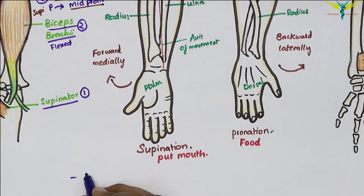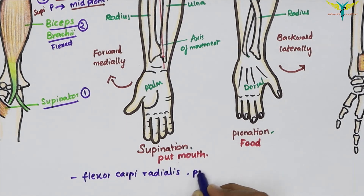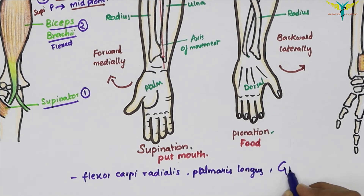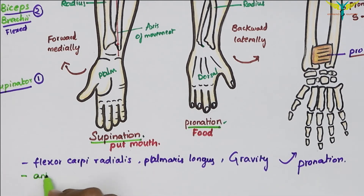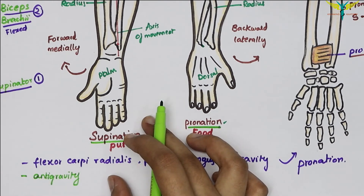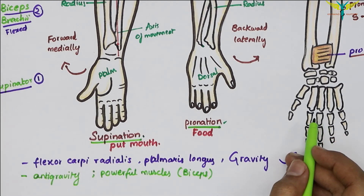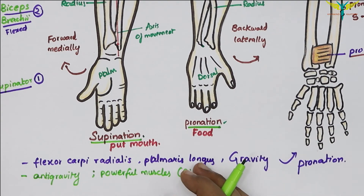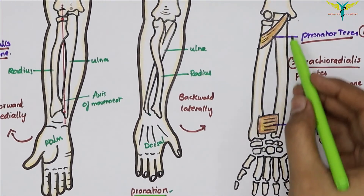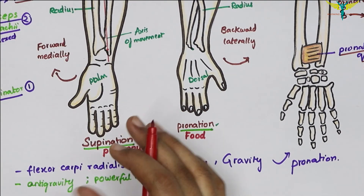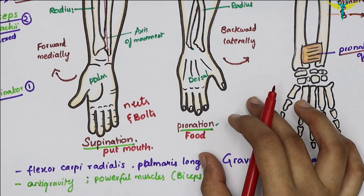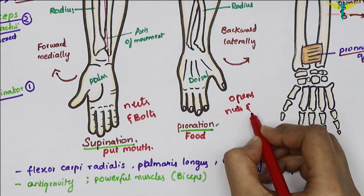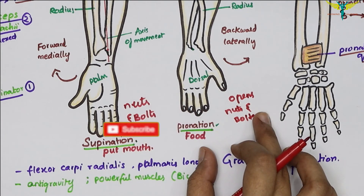Some additional points: the flexor carpi radialis, palmaris longus, and gravity also help in pronation. Supination is more powerful than pronation because it is an anti-gravity movement performed by the powerful biceps brachii. Pronation is less powerful, performed by the pronator quadratus and pronator teres. This is why supination is used for tightening nuts and bolts, while pronation is used for loosening them.